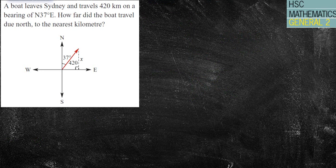Let's have a look at some questions. A boat leaves Sydney and travels 420 kilometers on a bearing of north 37 degrees east. How far did the boat travel due north to the nearest kilometer? They've been kind enough to draw that out for us. So we've got 37 degrees there. You can see we've got our triangle here. A couple of ways you could do it.